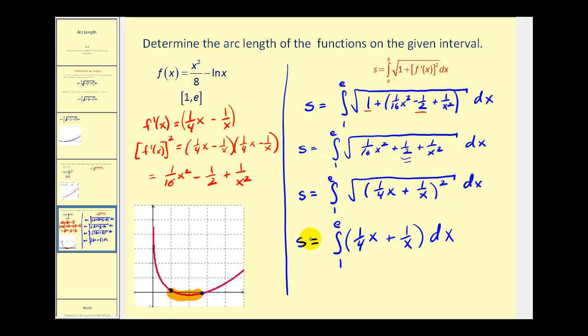So now we can finally integrate. This would be one-fourth times x squared over two plus natural log x. We need to evaluate this at the limits of integration. Notice this would be one-eighth x squared plus natural log x. Let's go ahead and take this over to the next screen and continue.